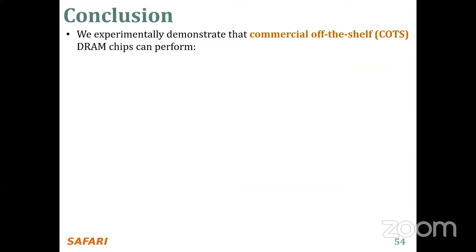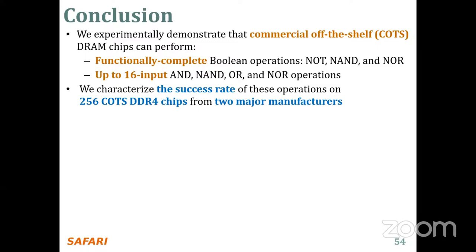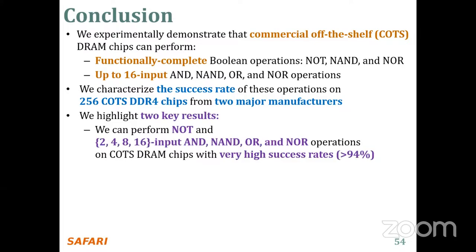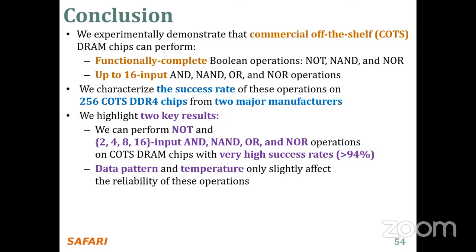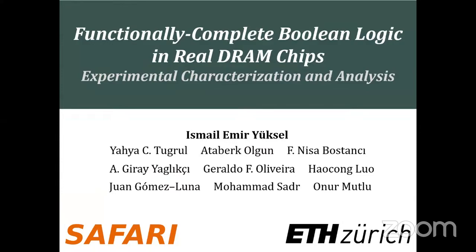Let me conclude my talk. In this study, experiments demonstrated that off-the-shelf DRAM chips can perform functionally complete Boolean operations — NOT, NAND, AND, NOR — with up to 16-input AND, NAND, OR, and NOR operations. We characterized the success rate of these operations on 256 off-the-shelf DRAM chips from two major manufacturers. Key results: we can perform NOT and 2, 4, 8, and 16-input AND, NAND, OR, and NOR operations with very high reliability. Data pattern and temperature only slightly affect reliability. We believe these empirical results demonstrate the promising potential of using DRAM as a computation substrate. Thank you for listening — I can happily answer your questions if you have any.